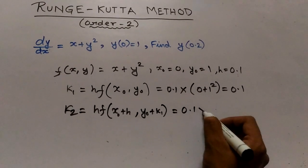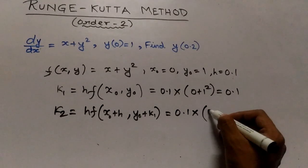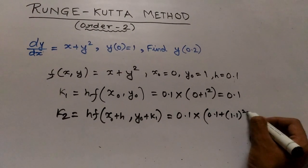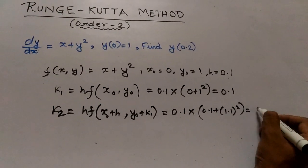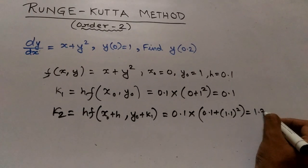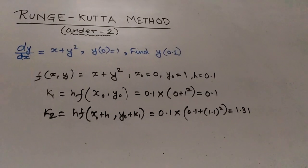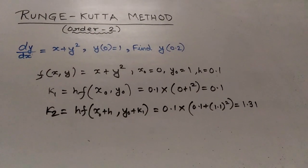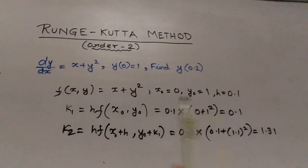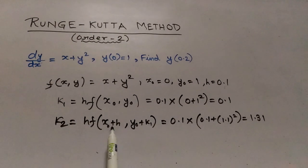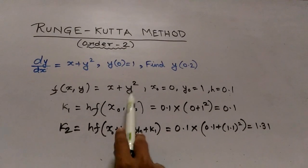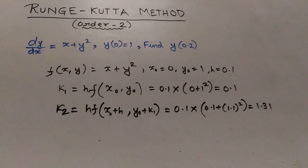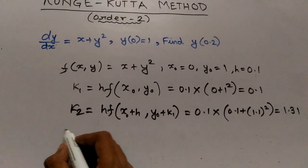K2 is HF(x0 + h, y0 + K1), that is 0.1 times (0.1 plus 1.1 squared), that is equal to 1.31. Now what we have done in case of K2, we have just replaced the x with x0 plus h and y with y0 plus K1. So now we can easily find the value of y1.